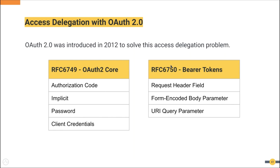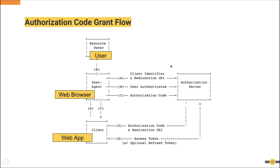Most of you are likely familiar with OAuth 2.0 grant flows, but I will quickly go through the authorization code flow to refresh your memories. First, the web application initiates the flow by redirecting the user to the authorization server with the application client ID. The authorization server verifies the client ID and prompts the login page for the user. After authentication, the user is redirected back to the application with an authorization code. The application then uses this authorization code and its credentials to get the access token, and can then use this token to access protected resources.